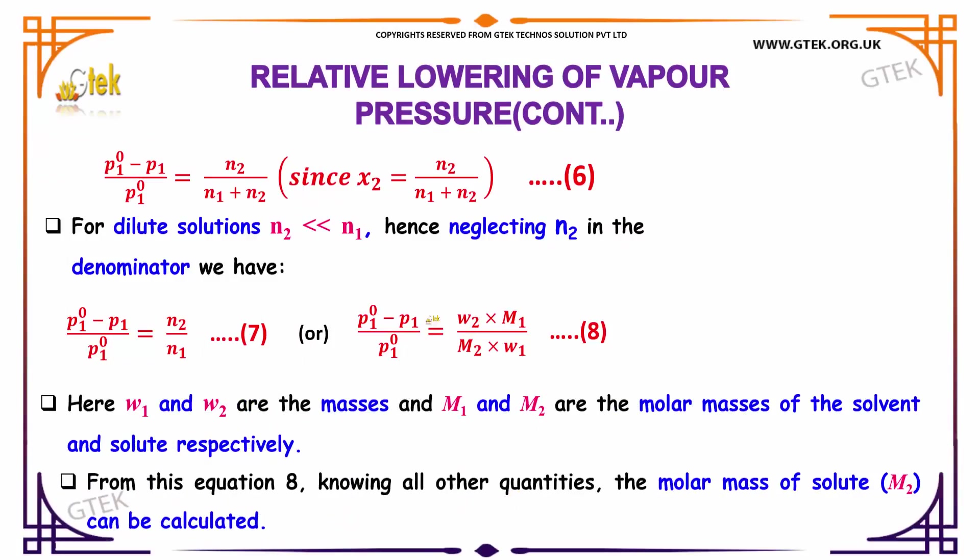For the dilute solution, N2 is really lesser than N1. So N2 can be negligible. We can remove N2 here. And it will become P10 minus P1 divided by P10 is equal to N2 by N1.